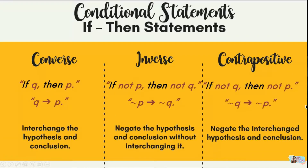You can screenshot this portion for reference during the learning task — materials will also be posted. To summarize: for the converse, we interchange the hypothesis and conclusion. It is important to know the hypothesis and conclusion first. Interchanging is the key operation for the converse.